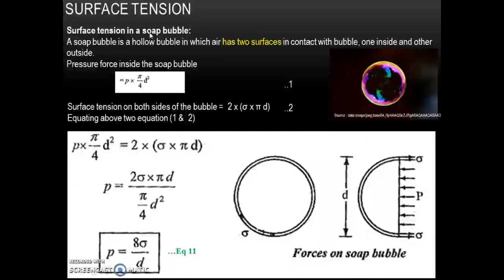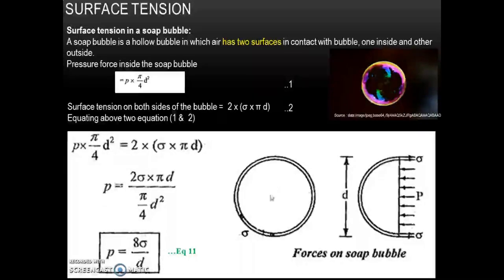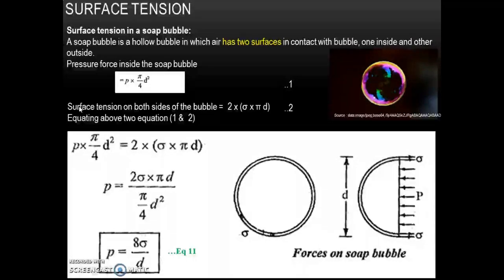Now we will find out surface tension in a soap bubble. A soap bubble is a hollow bubble in which air has two surfaces in contact with the bubble — one inside and one outside. The pressure force inside the soap bubble is F = P·(pi/4)·D². Since there are two surfaces, the surface tension force on both sides equals 2·sigma·pi·D.